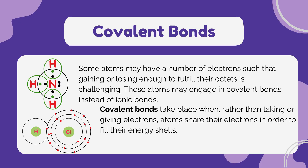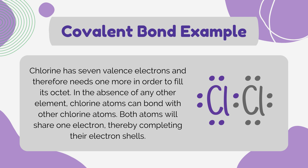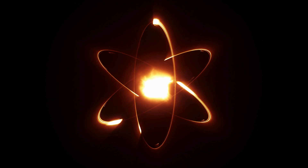In a covalent bond, atoms share valence electrons to achieve a stable electron configuration. This sharing allows both atoms to fill their outermost electron shells, typically containing eight electrons (the octet rule), resulting in a more stable arrangement. For example, chlorine has seven valence electrons and therefore needs one more to fill its octet. In the absence of any other element, chlorine atoms can bond with other chlorine atoms. Both atoms will share one electron, thereby completing their electron shells.